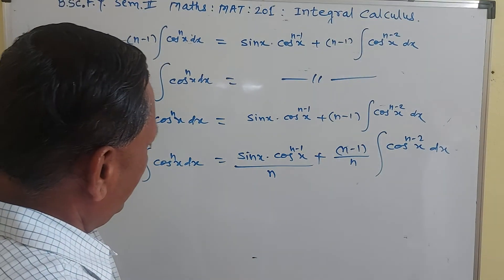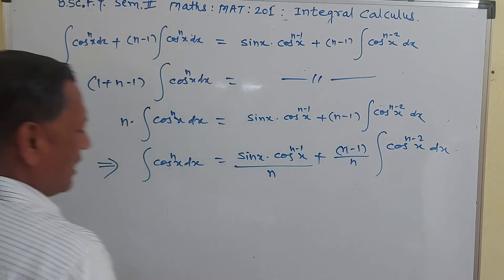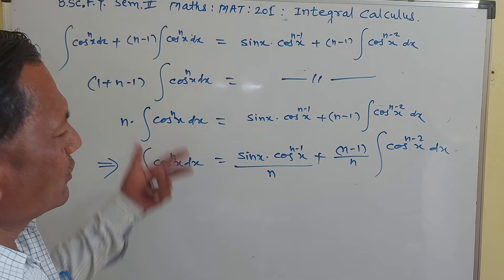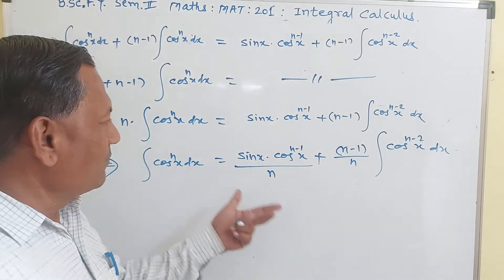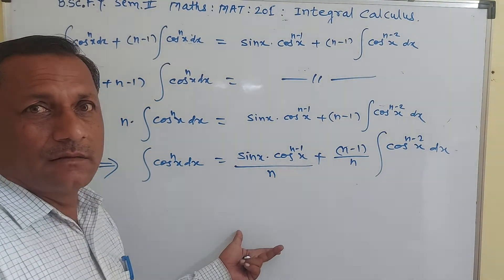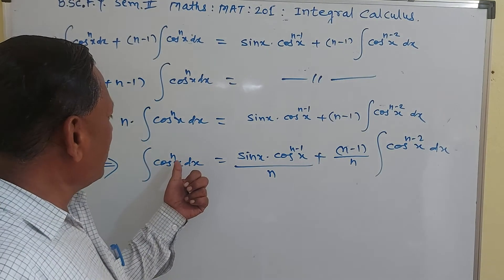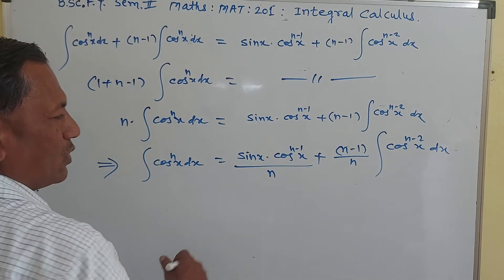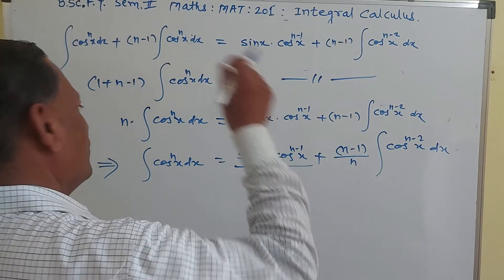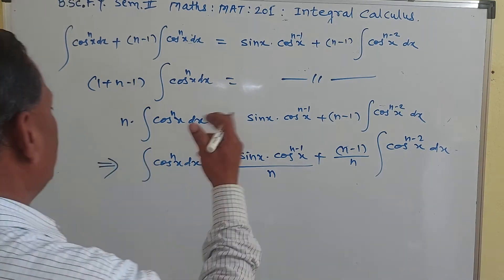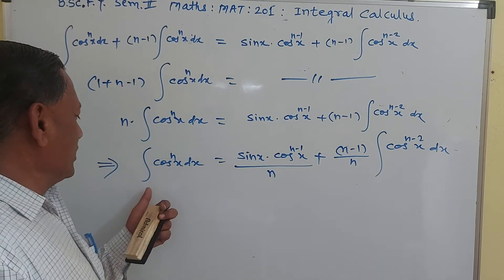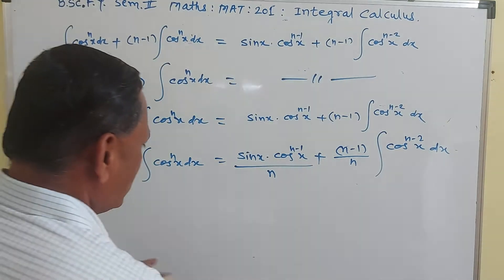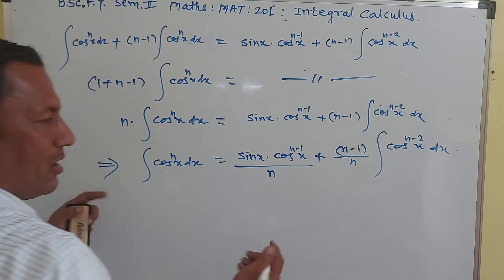Now, just as we know the definite integral of sin raised to n x dx from 0 to pi by 2, in the same manner we obtain the same formula for the integration of cos raised to n x dx from 0 to pi by 2. There is nothing more to prove; the formula for both is the same.